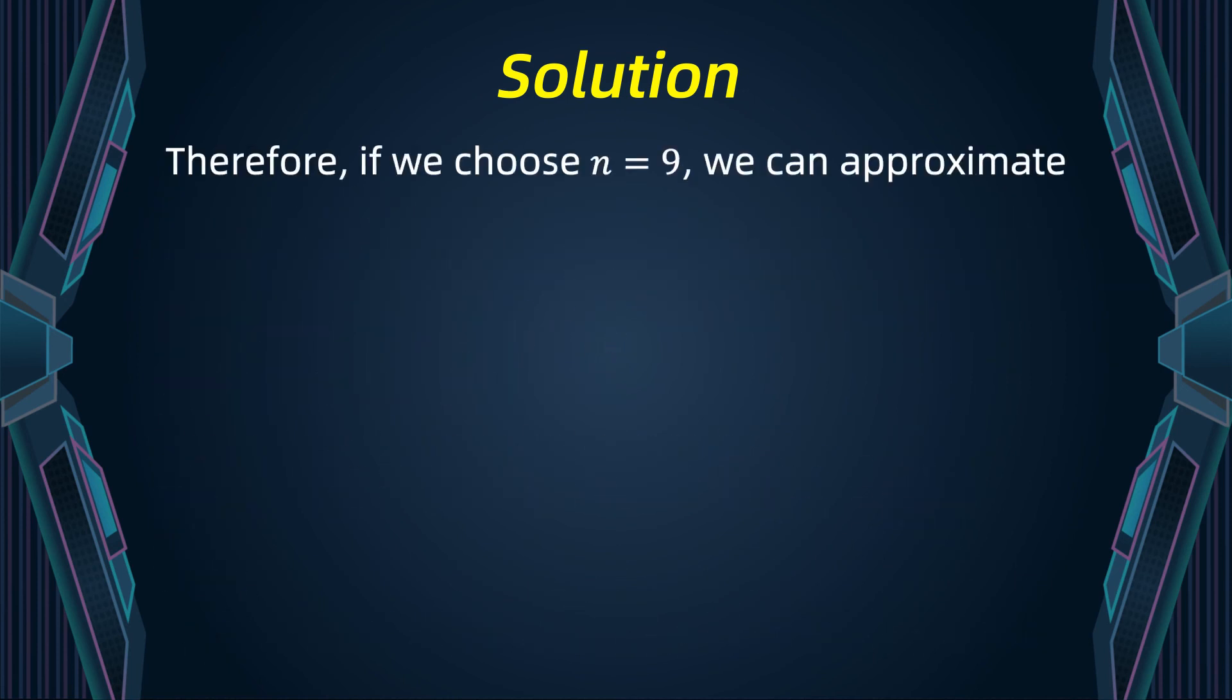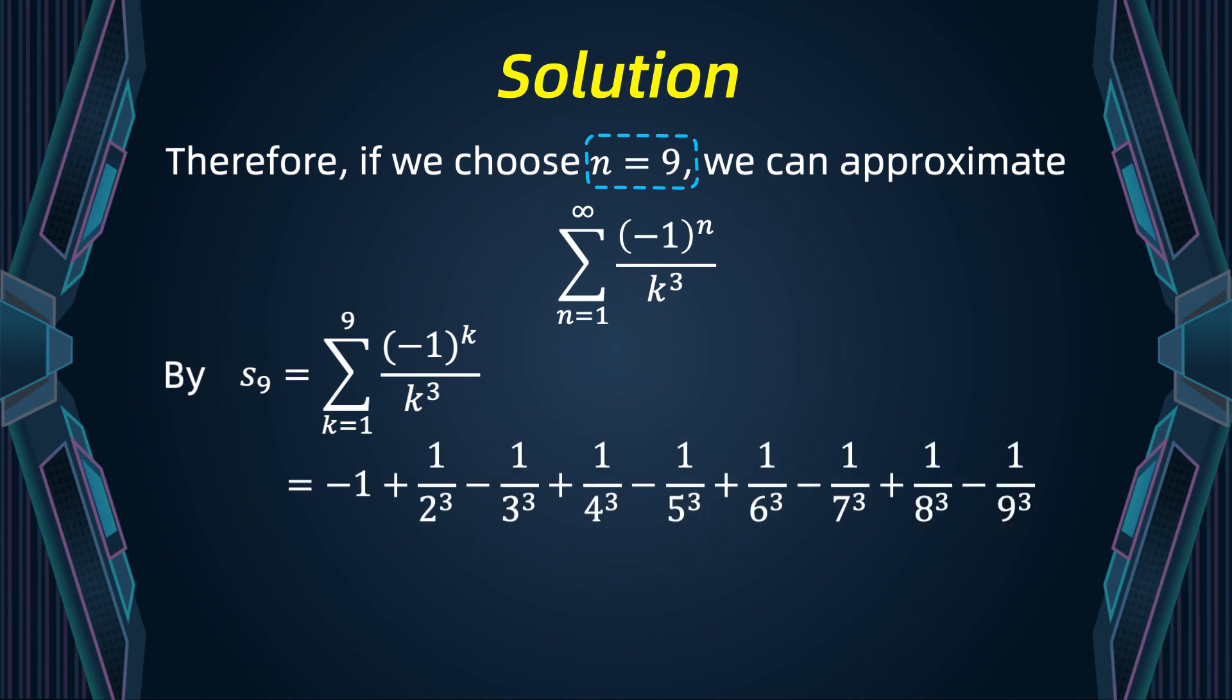Therefore, if we choose n to be equal to nine, we can approximate our alternating series by s9. The value of s9 is approximately minus 0.902. The error is less than 0.001.